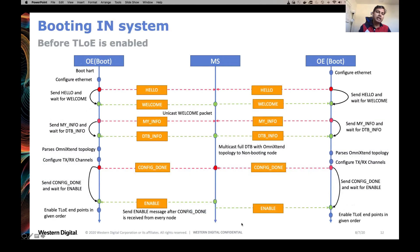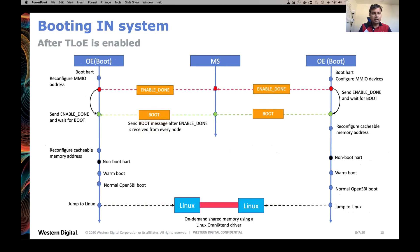For the independent node model, all of these steps happen in parallel — each node proceeds as it would in the normal boot case. There is no concept of boot node or non-boot node; all of them actually boot into Linux independently. The shared memory is then achieved by a kernel driver.